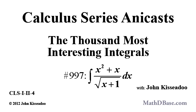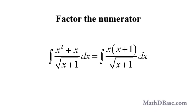So let's continue with interesting integral number 997. First, let's rewrite the integral by factoring the numerator to get two factors, one of which is the same as the argument of the radical in the denominator.